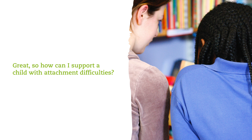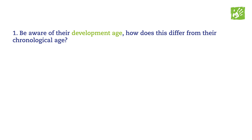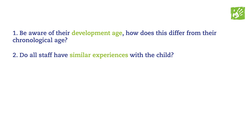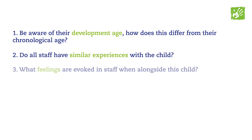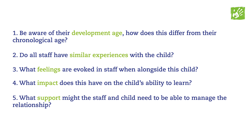So how can I support a child with attachment difficulties? Well, first, try asking yourself these questions to explore what's really going on for the child. Be mindful of their developmental age — how does this differ from their chronological age? Do all staff have similar experiences with the child? What feelings are evoked in staff when working alongside this child? What impact does this have on the child's ability to learn? What support might the staff and child need to be able to manage their relationship?